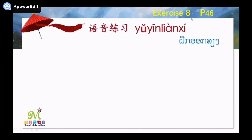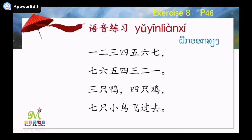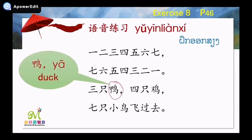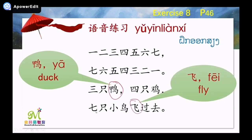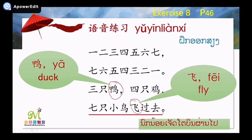Exercise 8 is on your book, page 46 — 语音练习. Look at these sentences and read: 一,二,三,四,五,六,七。七,六,五,四,三,二,一。三只鸭。四只鸡。七只小鸟飞过去。八只鸭飞过去。You can read this after class and read it to your family members.